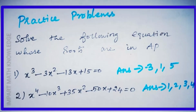To summarize: for finding roots in arithmetic progression, first write the assumed roots in AP form, then find a and d using the sum of roots taken one at a time and the product of the roots. Hope you all understand. Thank you for watching.